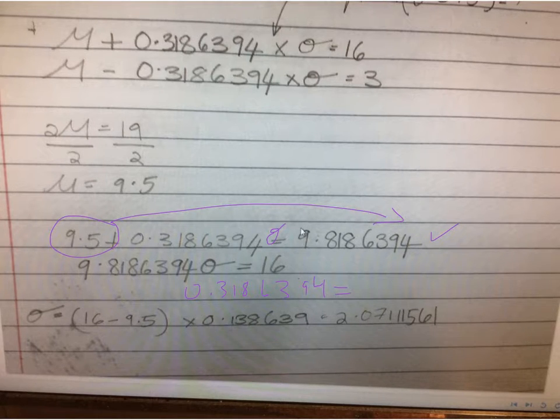equal to 9.8186394 minus 9.5. And so that'll just give you 0.5186394.